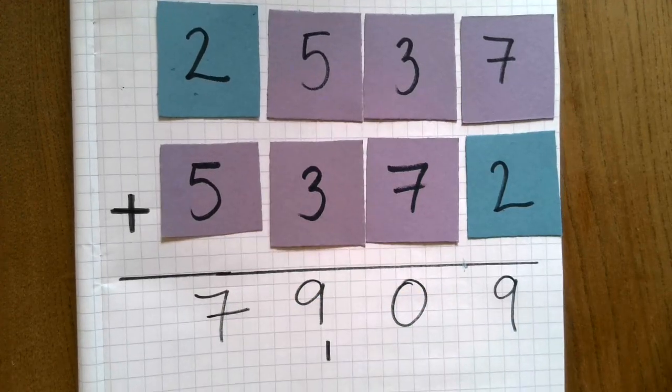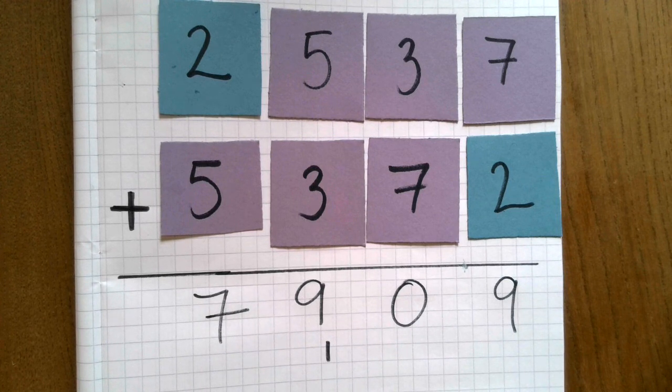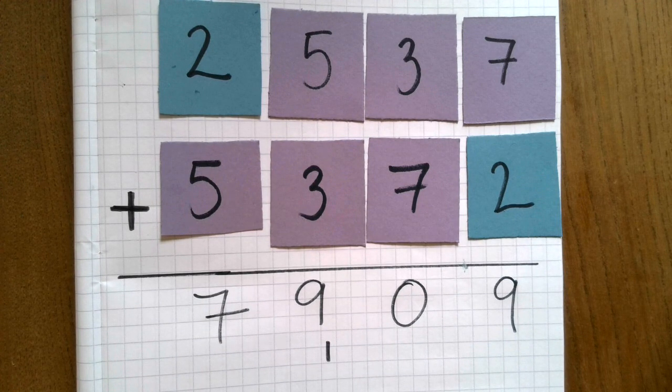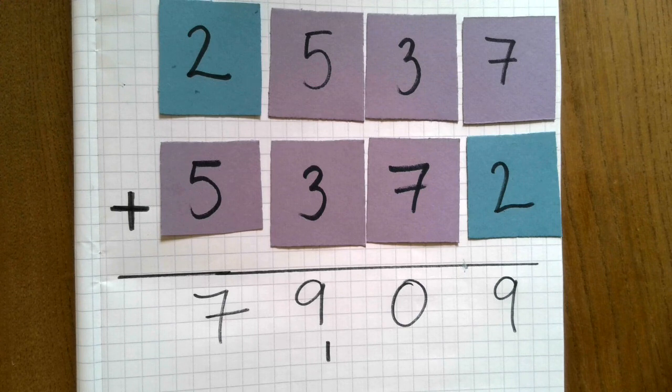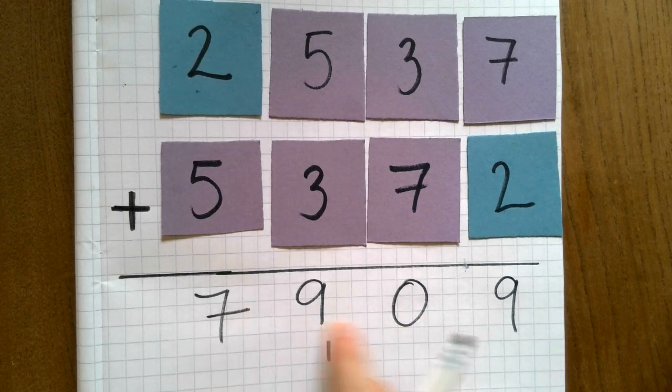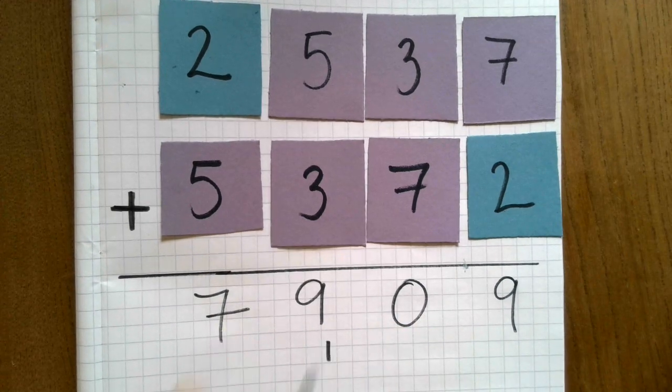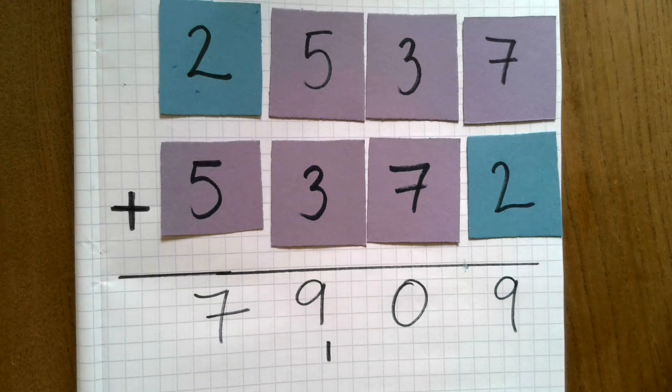Now I predict that whatever you get here is going to be divisible by 11. So let's check that with my one. Let's check 7909 divided by 11.